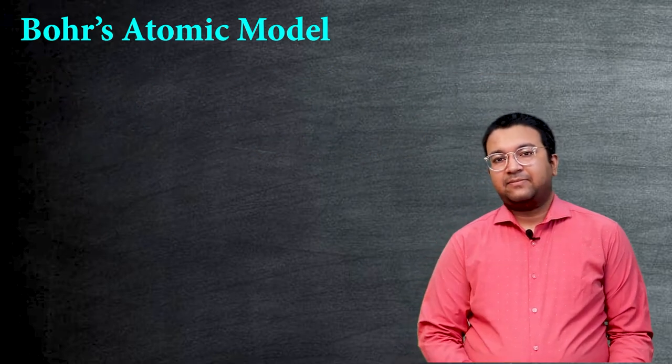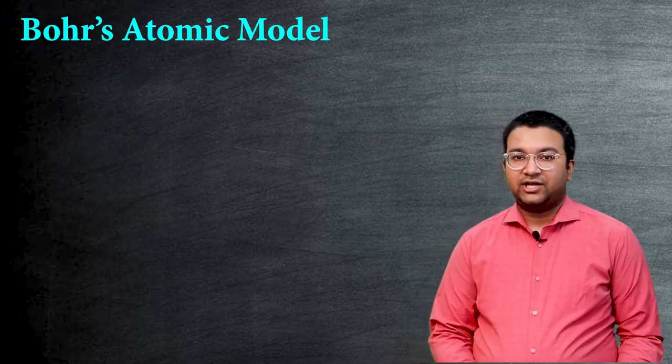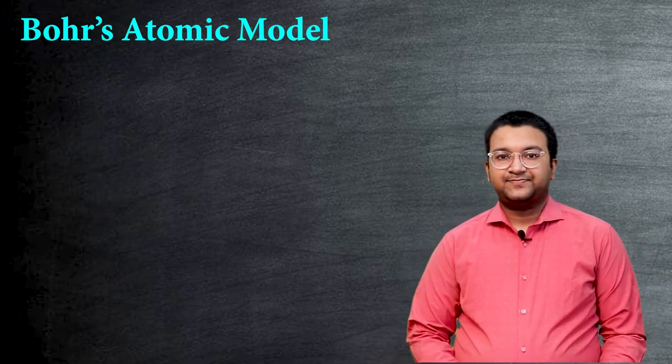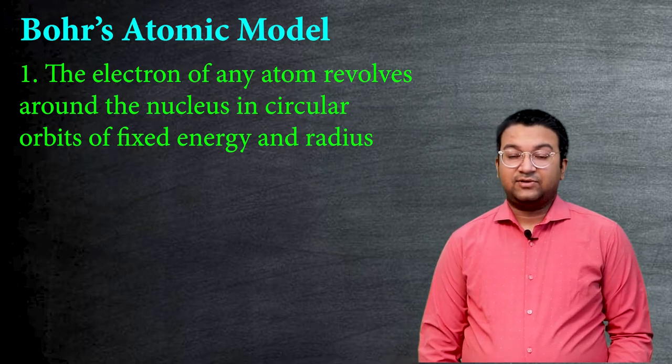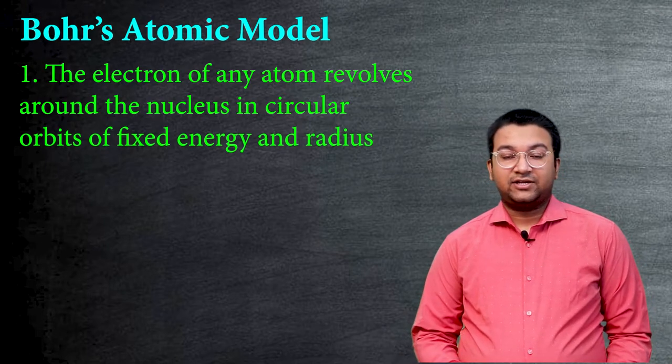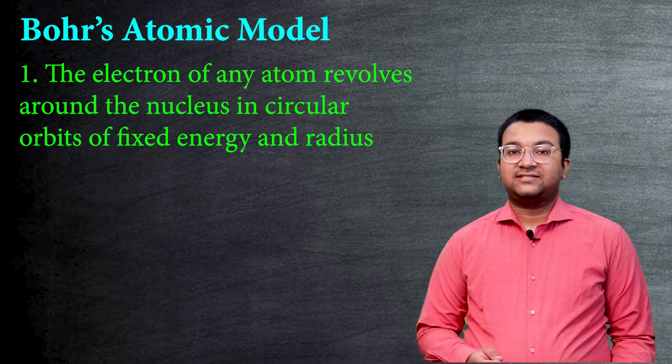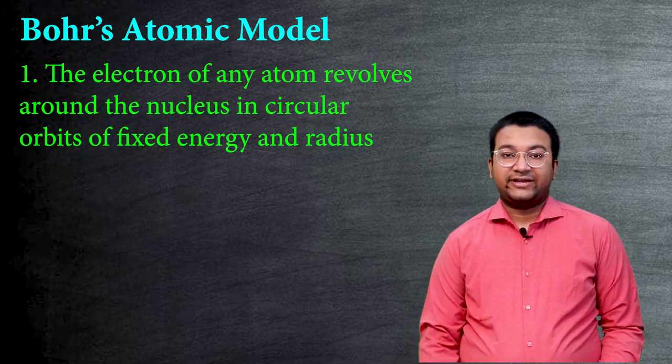So what are the main points related to Bohr's theory? The first point says that the electrons of any atom revolve around any orbit and those orbits contain a fixed amount of energy and a fixed radius.